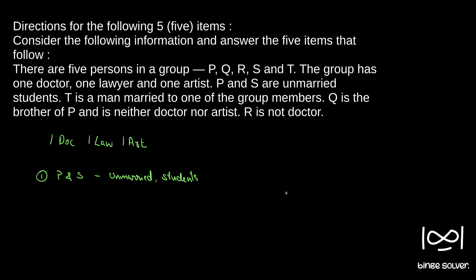P is a man married to one of the group members. So, just like in the previous relationship problems, I will be using some notations here. I will just go through it quickly. Whenever there is a male person, I will represent that person using a square box — if I write a square and put A inside, it means A is a male person. And if I put B and circle it, it means B is a female person. You can use your own notations. In such questions, it is always useful to have such notations so that we can quickly draw figures and break down the big sentences into small diagrams to quickly solve the answers.